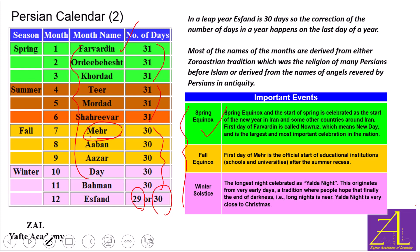The fall equinox is the first day of Meher, which is when schools begin. So the fall equinox is another important day in this calendar. The length of day and night are equal on both the spring equinox and the fall equinox.